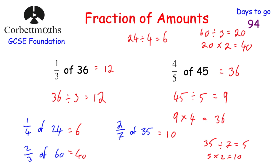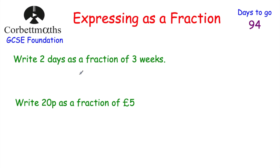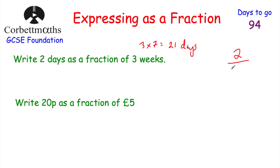Now let's look at expressing things as a fraction. You might need to do this in money or probability questions. The first question: write two days as a fraction of three weeks. First, convert three weeks into days — three times seven is 21 days. So two days as a fraction of 21 days is two over 21. Two days as a fraction of three weeks is two over 21.